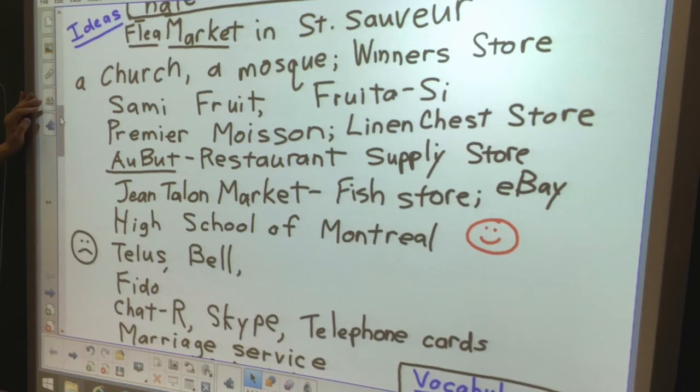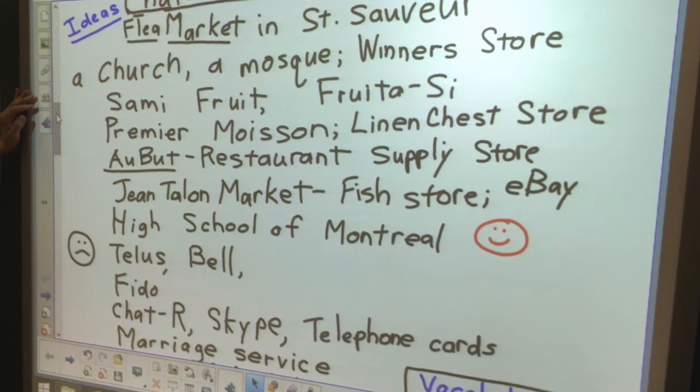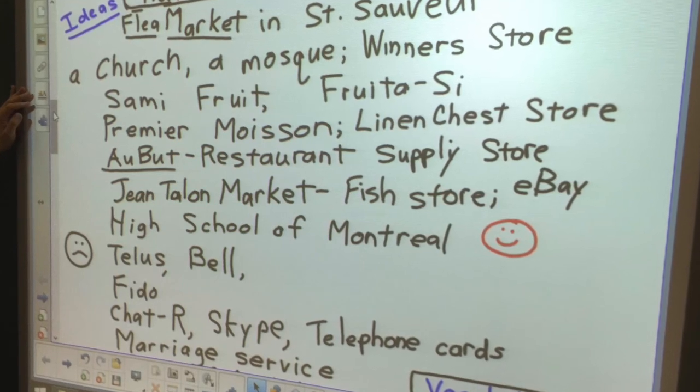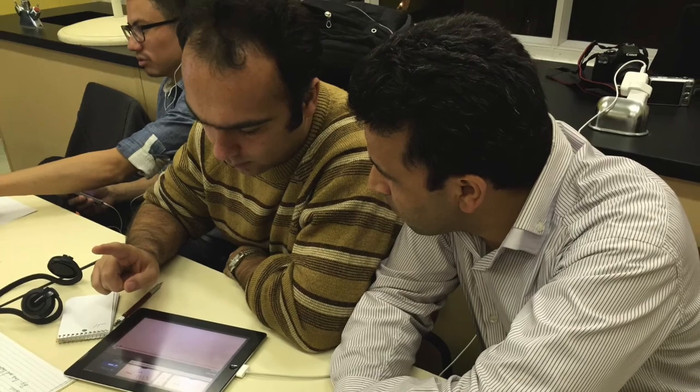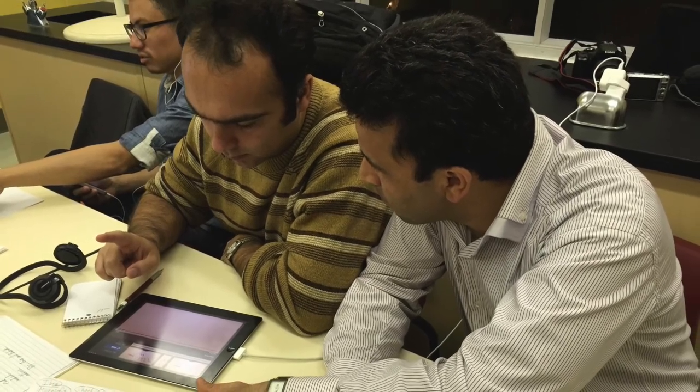First, the class brainstormed ideas for a service, a product, a store, or a restaurant that they like or that they don't like. The students were also given another option to create a public service announcement. This kind of oral interaction fits well into our course, which includes learning to express likes and dislikes. Some pairs of students wrote a dialogue, other pairs created a monologue.